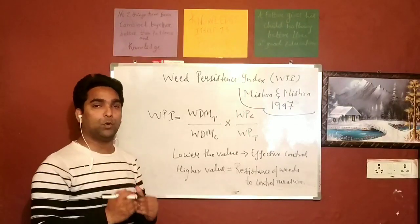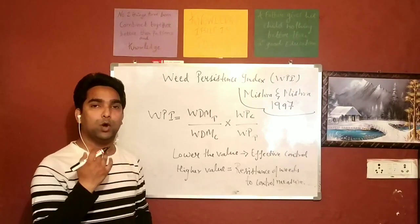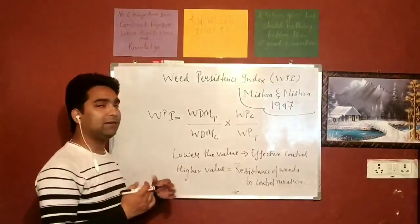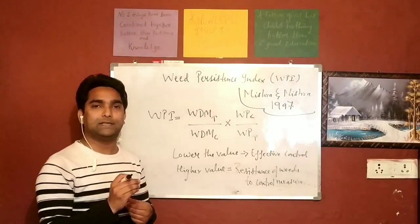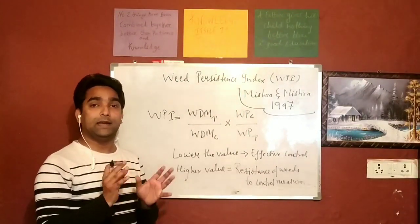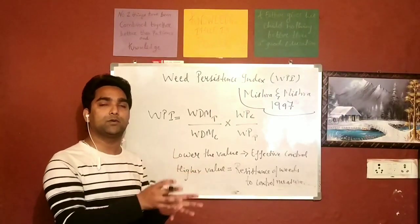So it means the lower the WPI, the better the herbicide and weed control measure. And the higher the value of WPI, it means that that particular weed control and herbicide is inefficient and the weeds are particularly resistant to that method or control measure.